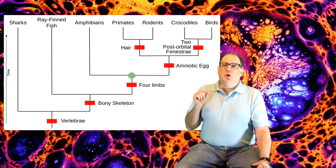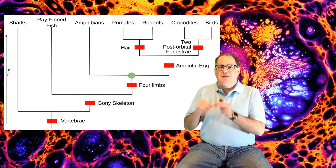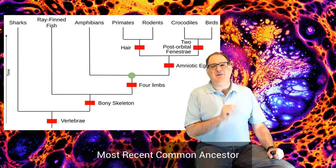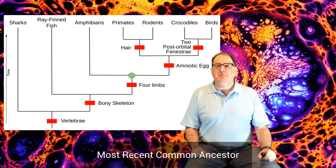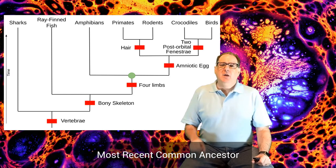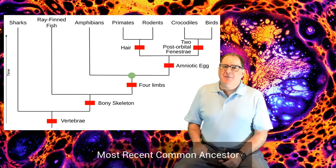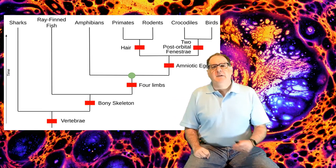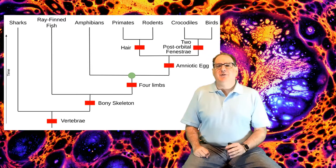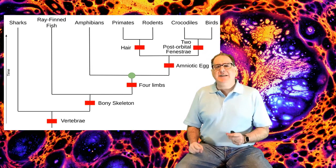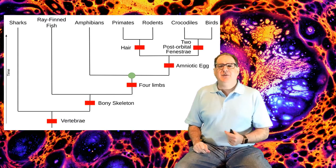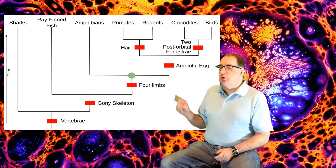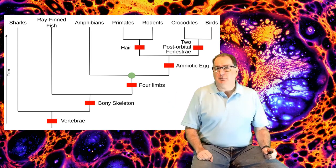The places where a vertical line branches into a horizontal line is when the most recent common ancestor of all the things above it lived. For the one leading to amphibians and primates, etc., I've marked it with a green circle. From this, you can tell that the branch leading to amphibians happened sometime after four limbs developed, and four limbs happened after bony skeleton.